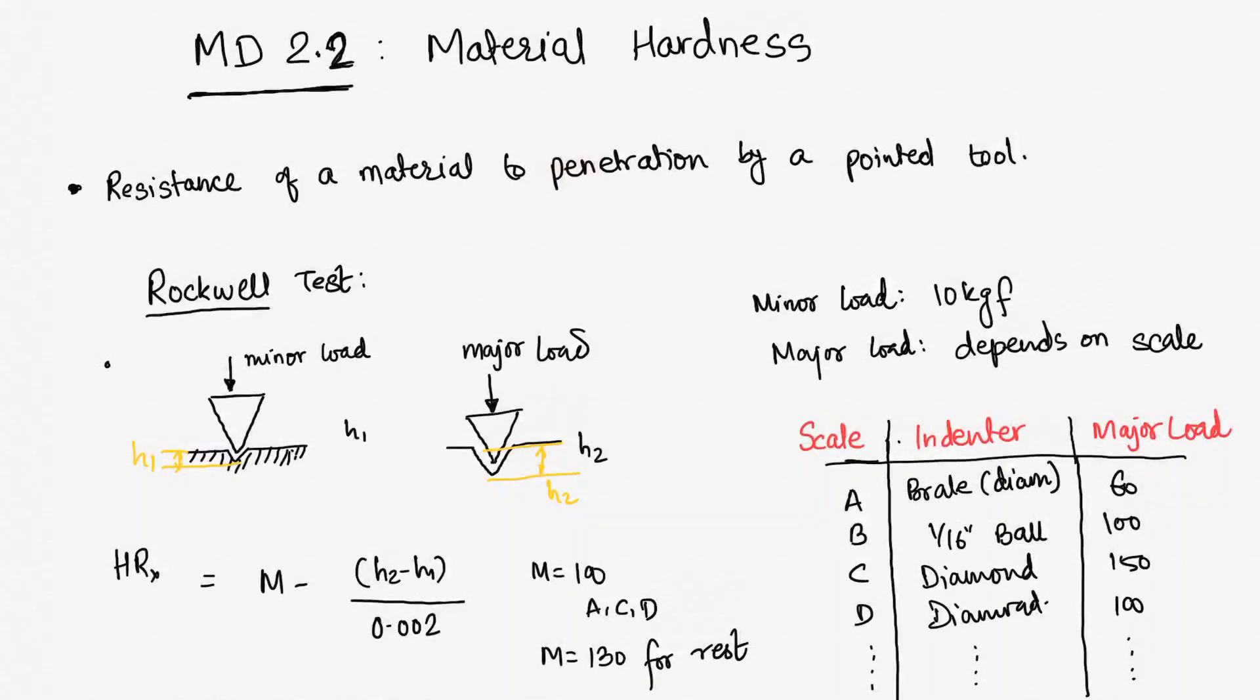So what do we do for that? We are having certain tests. The first test is Rockwell test. In a Rockwell test, we are having certain scales. We define Rockwell based upon certain scales which can be A scale, B scale, C scale. Those scales will give me what sort of indenter I need to use and what will be my major load for the testing.